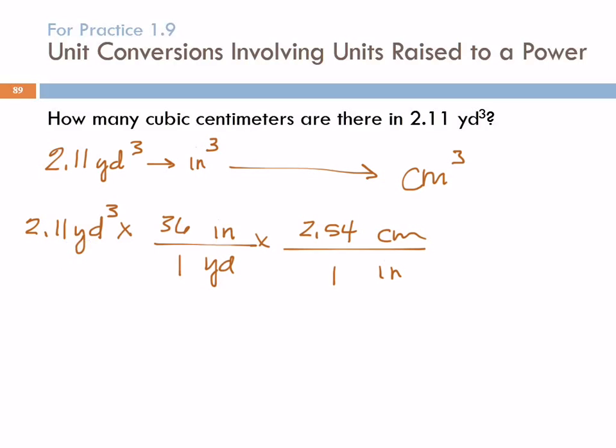So to get this yards cubed to go away I have to divide by yards cubed. So I need to cube the whole conversion factor. Okay? When I go to do that what I'm really doing is I'm cubing each of the pieces. The numbers get cubed and the units get cubed. So now the yards cubed cancel out. Over here I need to cube the numbers and the units and then cubic inches cancel out.